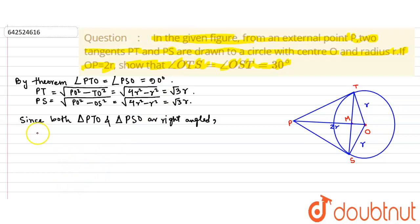So tan of angle POT equals PT by TO. That is further equal to root 3r by r, which gives root 3, which is equal to tan 60 degrees.